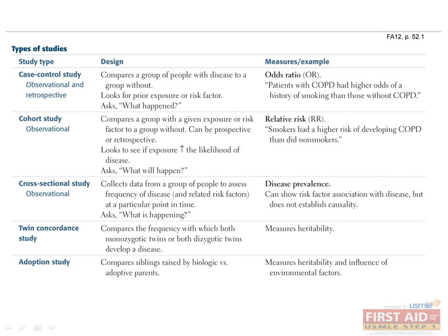Twin concordance studies compare the frequency with which both monozygotic twins and both dizygotic twins develop a disease. This measures the heritability of a disease. Specifically, the more concordance a disease shows for monozygotic twins relative to dizygotic twins, the greater the heritability of the disease. Adoption studies compare siblings raised by biologic versus adoptive parents to separate heritability from the influence of environmental factors on disease.